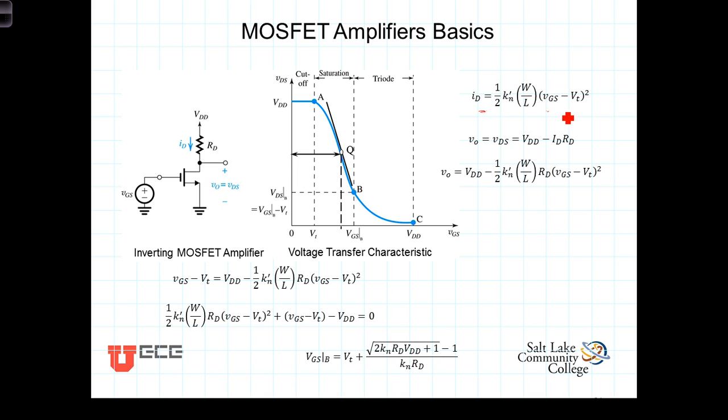But a more commonly useful amplifier is a voltage-controlled voltage source. We can convert the current to a voltage by replacing R sub D into the drain part, or connected to the drain of the amplifier circuit as shown here, and taking VDS to be the output voltage.